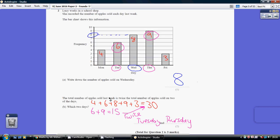The total number of apples sold last week is twice the number of apples sold on two of these days. Which two days? If we add up the numbers of apples sold all week,